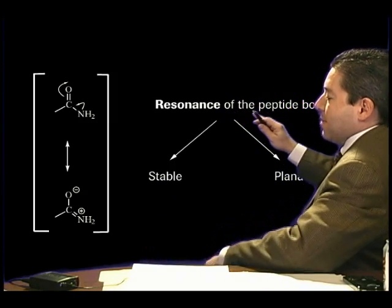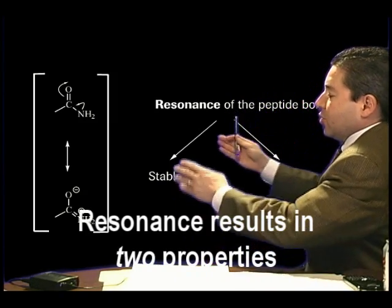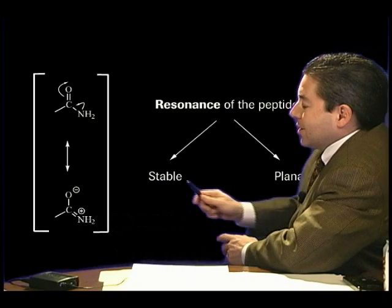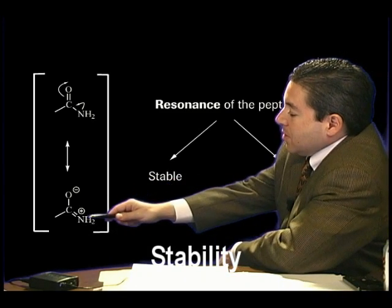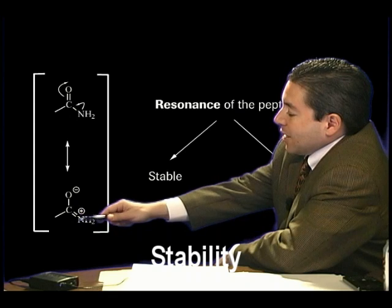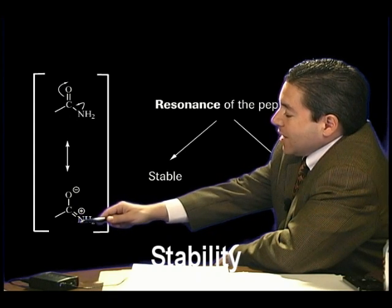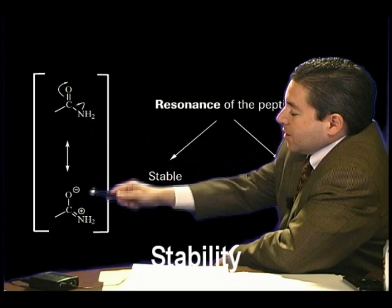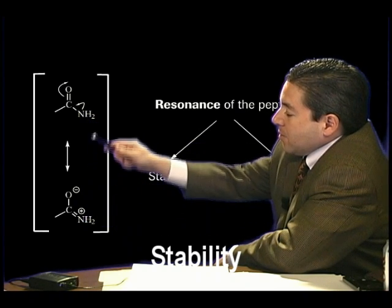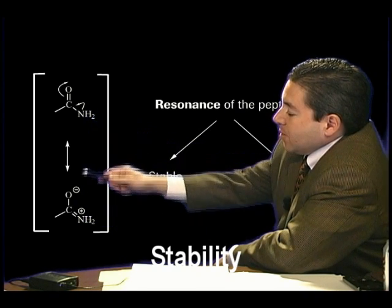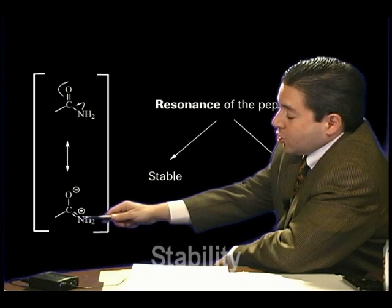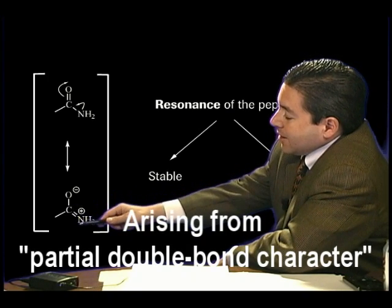This resonance of the amide, or peptide bond, results in two properties. Stability. Why is it stability? Because the carbon-nitrogen linkage, which is the actual amide linkage, is more energetically stable than a pure single bond, not quite as much as a double bond, but more energetically stable than a single bond. It has what's called partial double bond character.